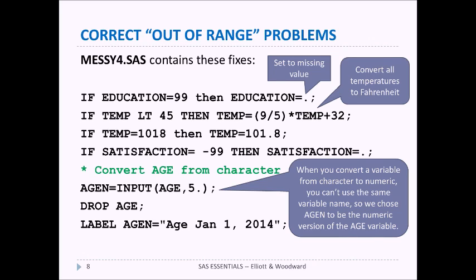Now to deal with the age problem of the variable we use the input function to convert the character age into a numeric variable that we're going to call AGEN. We're going to drop the old age variable and give the new one a label. Note that when you convert a variable from character to numeric you can't use the same variable name. So that's why we chose AGEN to represent the numeric version of the age variable.